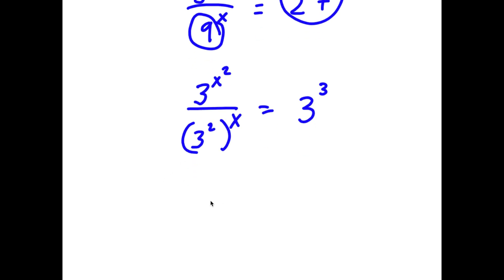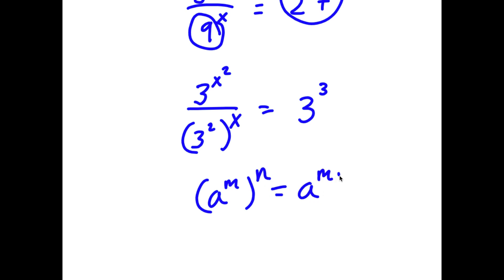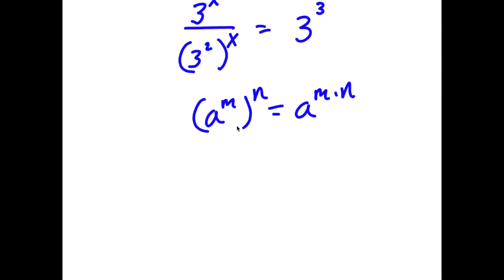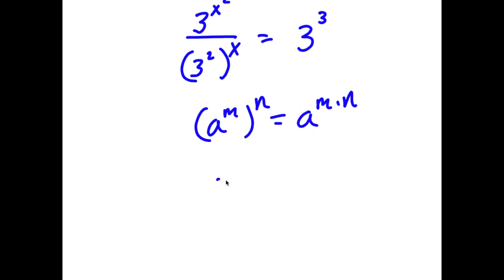If I have something in the form a to the power of m to the power of n, this is equal to a to the power of m times n. So 3 squared to the power of x is equal to 3 to the power of 2 times x, which is 3 to the power of 2x. This is equal to 3 to the power of 3.